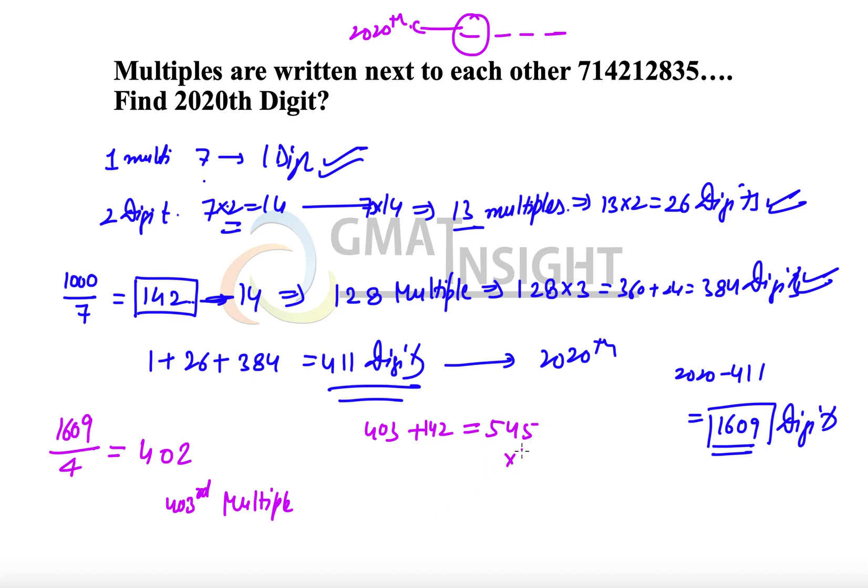So 545 multiplied by 7, let's see what we get. 35, 31, 38, so we have 3. So 3 must be our answer, because 2020th will be 3. I hope that helps, thank you so much.